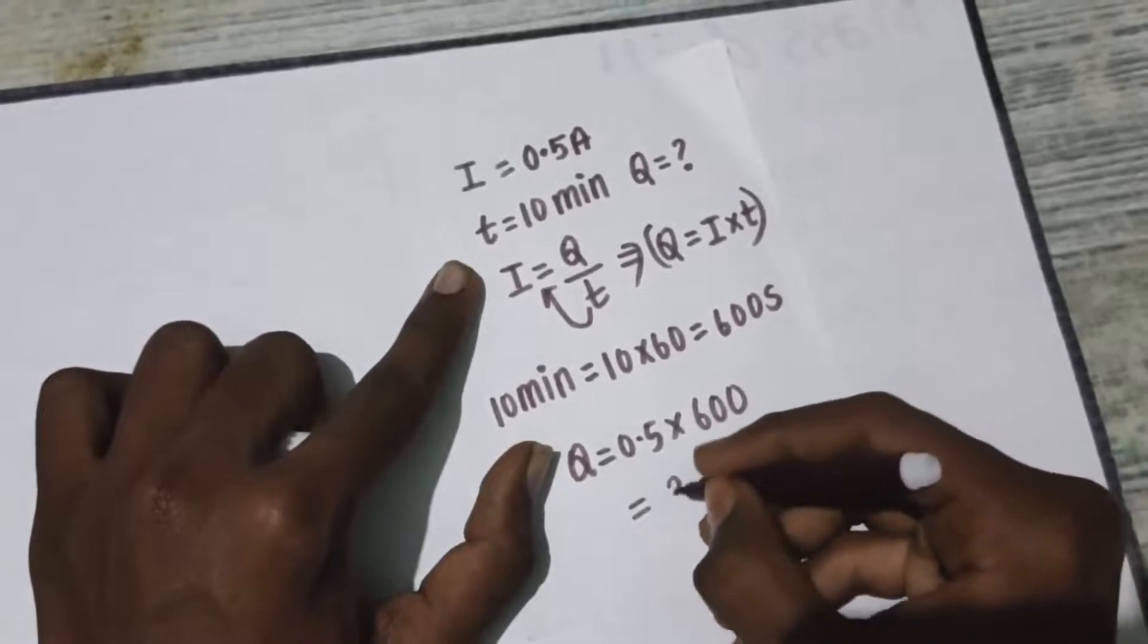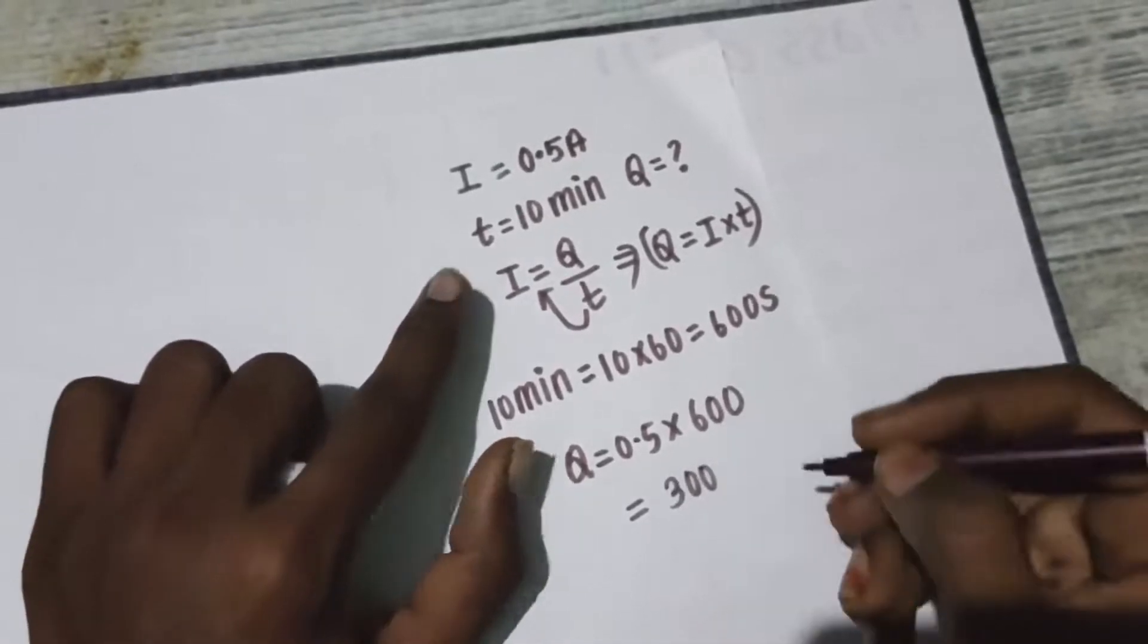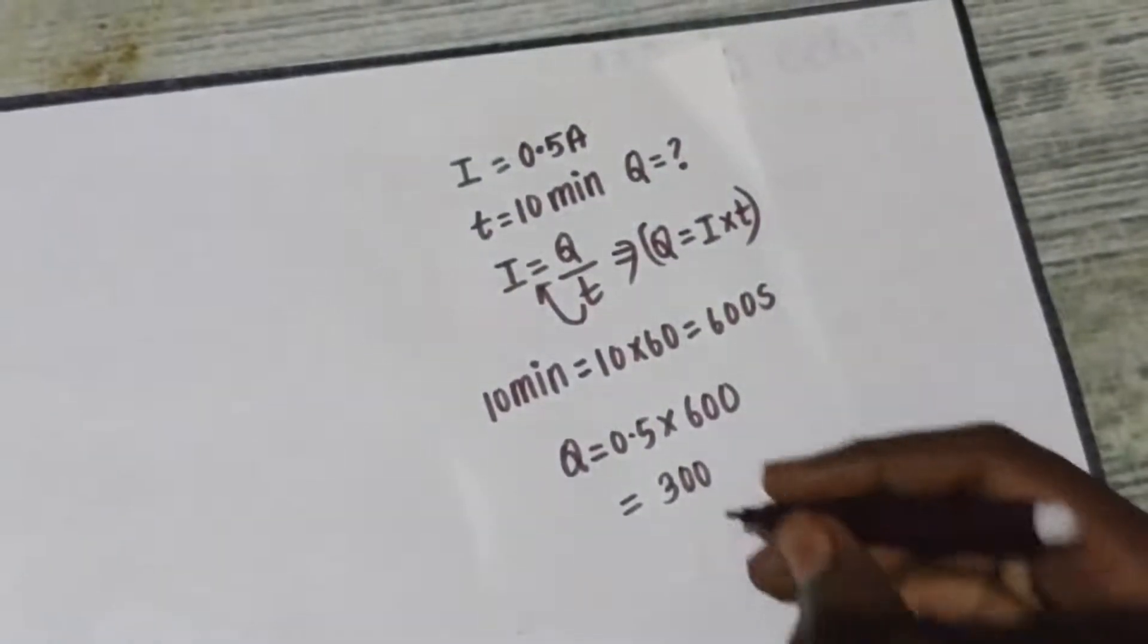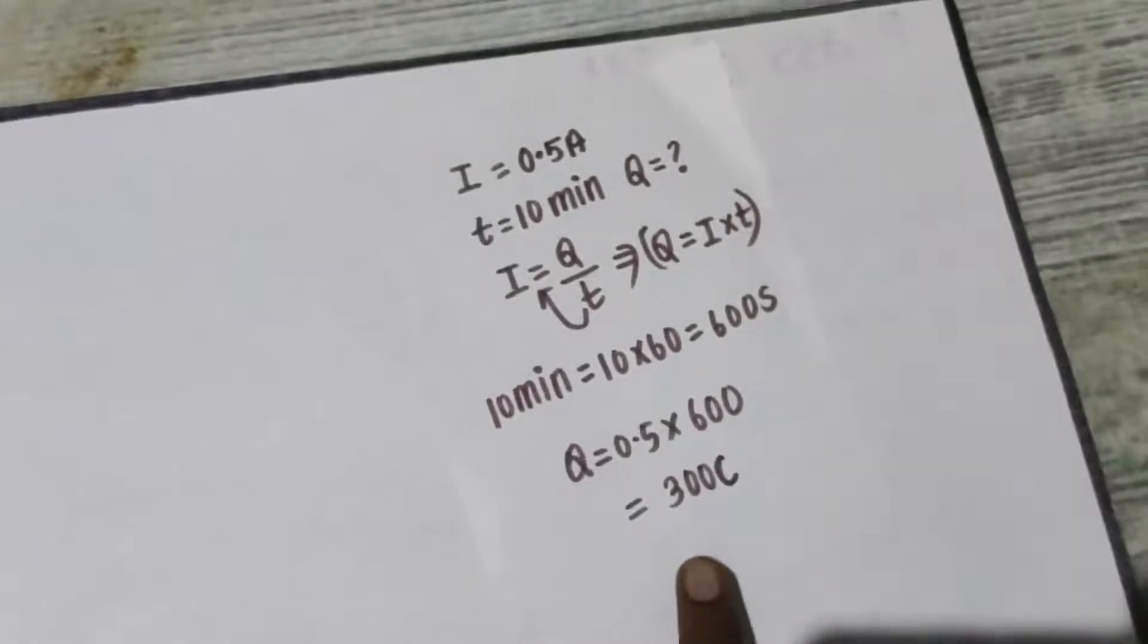Okay, 600. 0.5 multiply by 600. You will be getting 300 coulomb. So this is the thing which you have to know.